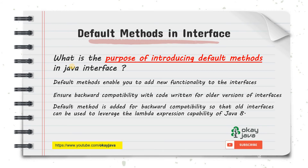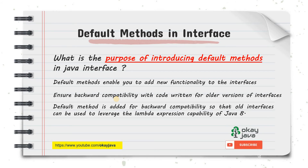Next question: what is the purpose of introducing default methods in Java interface? This is a tricky and very good question. The simple answer is: default methods enable you to add new functionality to interfaces, and they ensure backward compatibility. Let me explain this better with code.